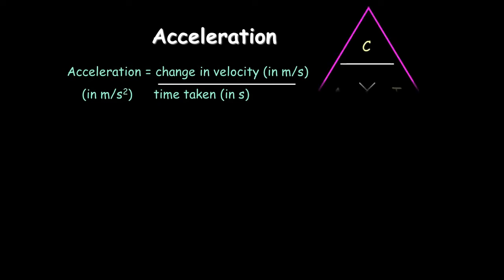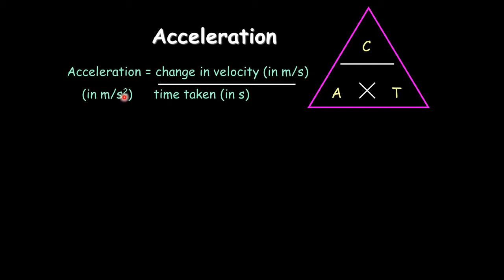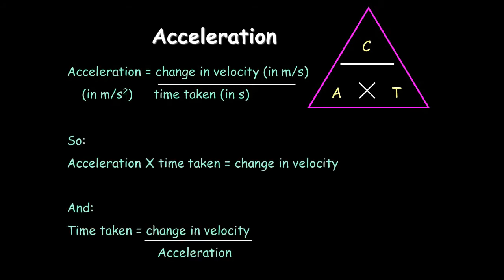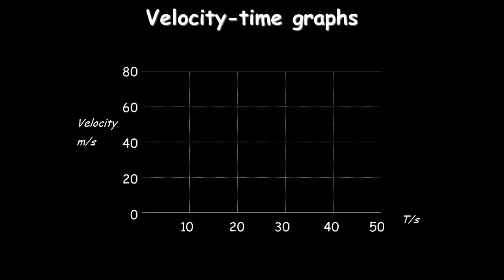Acceleration: the equation will be given on the exam, but you may want to put it in a triangle. Remember we're looking at change in velocity — use C, giving a CAT triangle that's easy to learn. Acceleration is change in speed over time. The units for acceleration are meters per second squared, not meters per second. Rearranging: cover C to get acceleration times time; cover T to get change in velocity over acceleration.